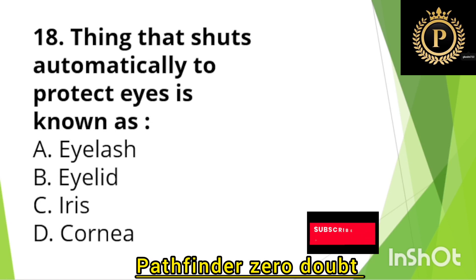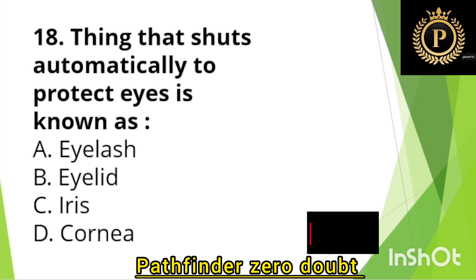The thing that shuts automatically to protect the eye is known as — Option B: Eyelid.